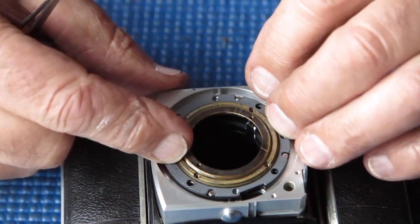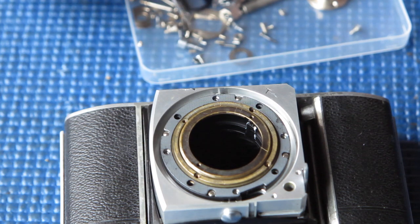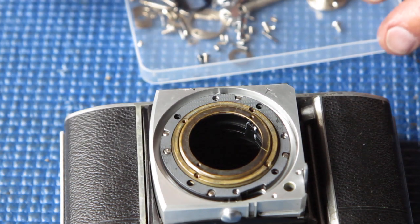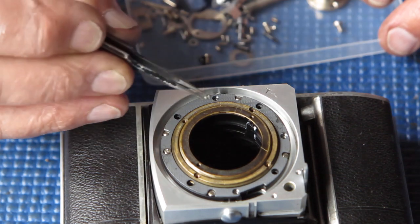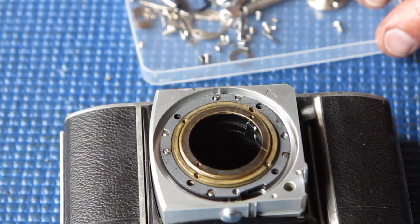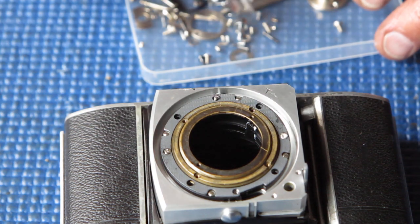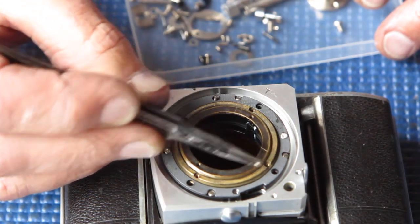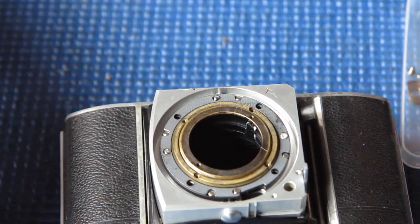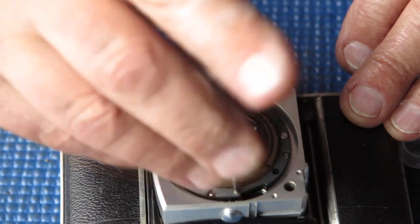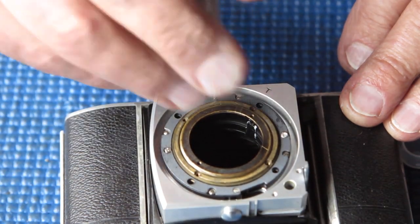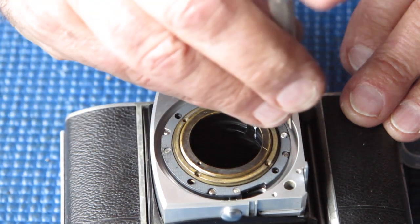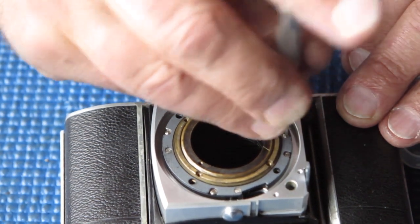So the retainer plate can go on. That only fits on in one position. And there are four small flathead or countersunk screws that hold this plate down. So I'll get those in and tighten them up. As usual, get the screws all started. Once you've got them all started, go around and tighten them up. That's it. All in.